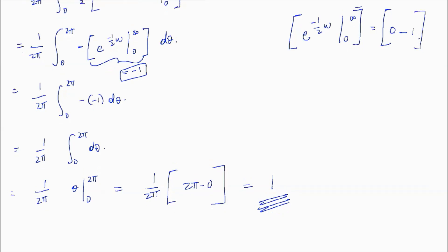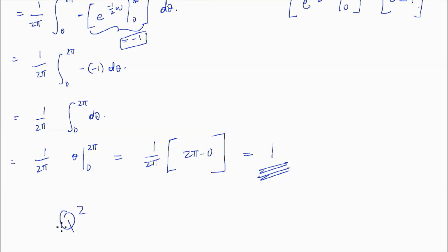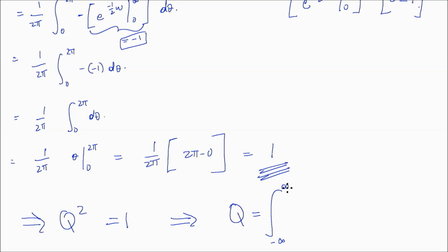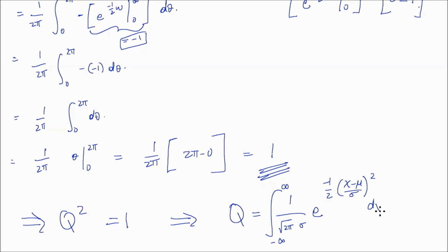So we have shown that Q squared equals 1, which implies that Q — the integral from negative infinity to positive infinity of the normal distribution density 1 over root 2 pi sigma times e to the negative one-half x minus mu over sigma quantity squared dx — is equal to 1. We have therefore proven that the normal distribution density function integrates to 1.